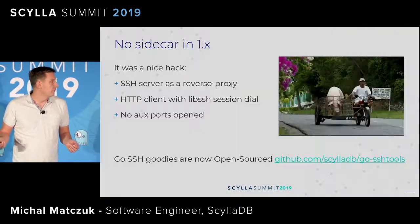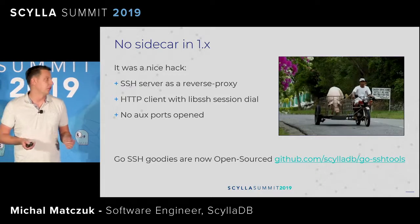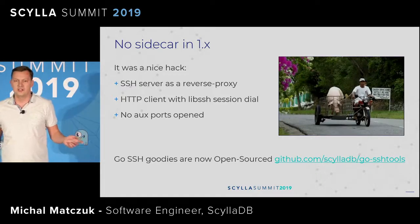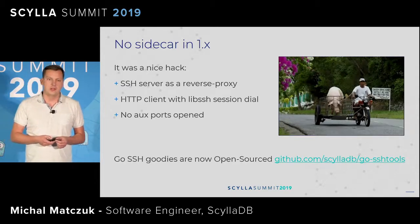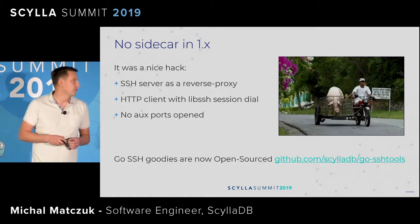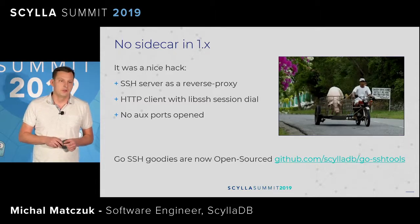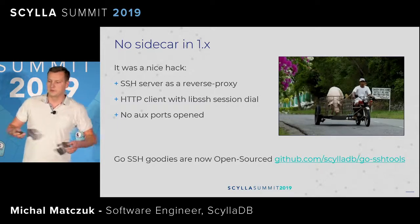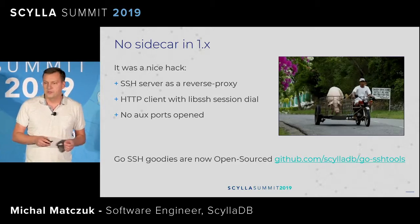Scylla Manager 2.0 — as you may know, Cassandra has their sidecar project idea. I was here last year talking about Scylla Manager 1.2 or 1.4, and I was saying that we don't actually need a sidecar. Scylla Manager talks with Scylla nodes directly over the Scylla REST API, which means it does not go over the JMX proxy — there's a JMX translation layer and there are challenges with that.